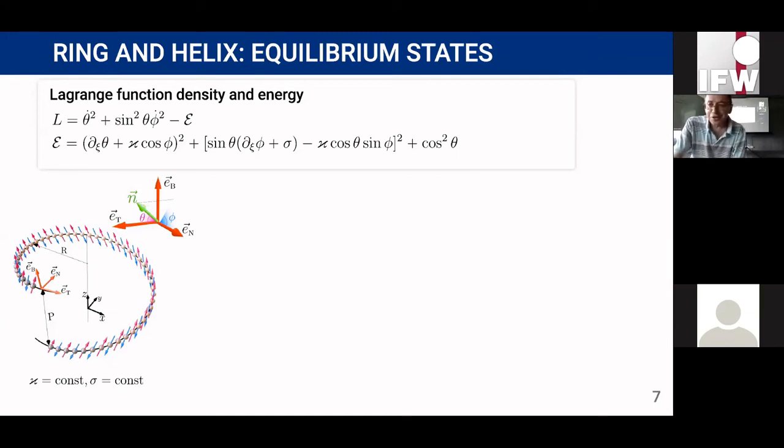Actually the question was whether you have some commensurability between this period which you have here in z and the period of your oscillations of magnons, especially interesting if you have one turn and two turns, is there any difference? No, the theory you need to use is for the infinite system. Yes.